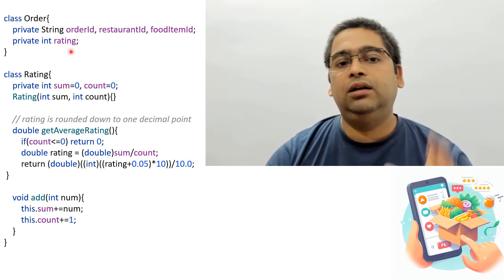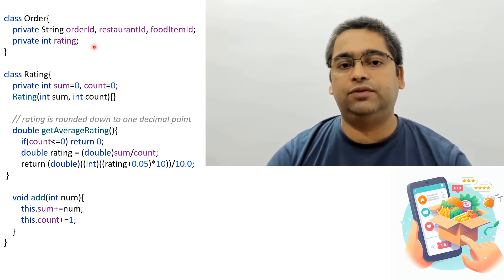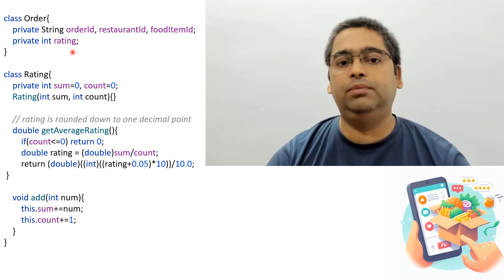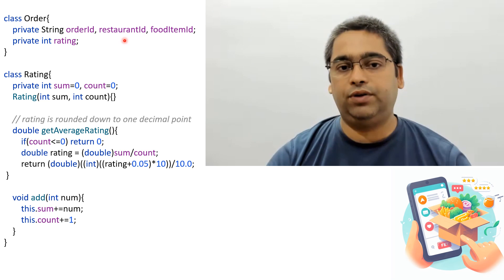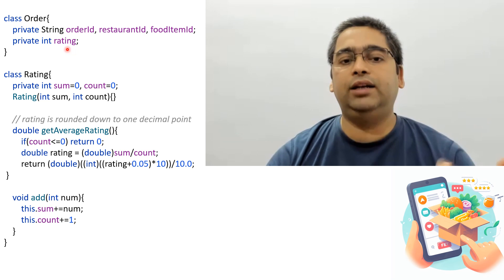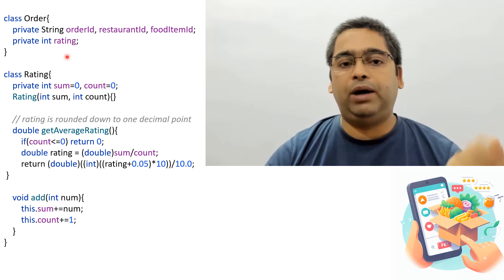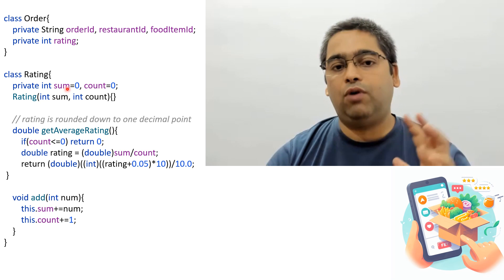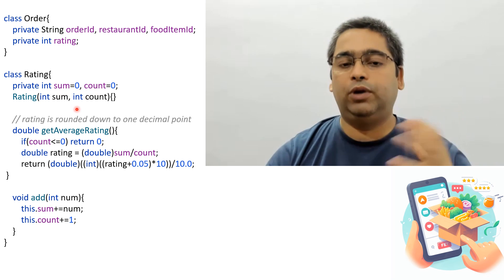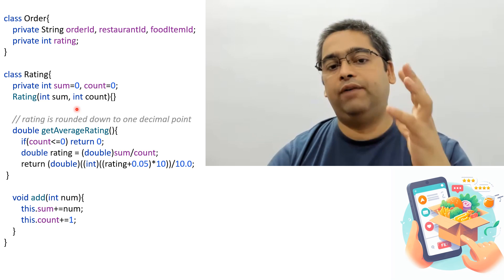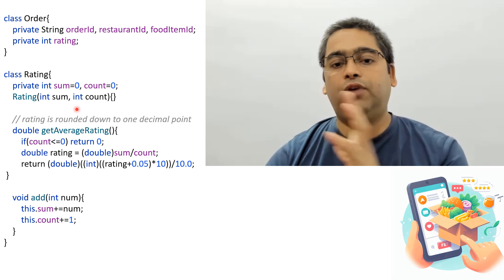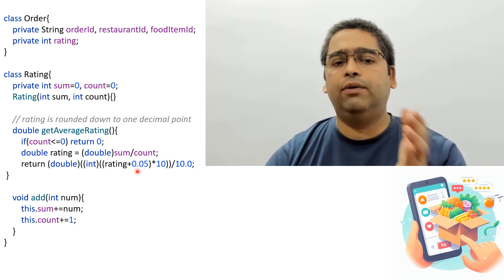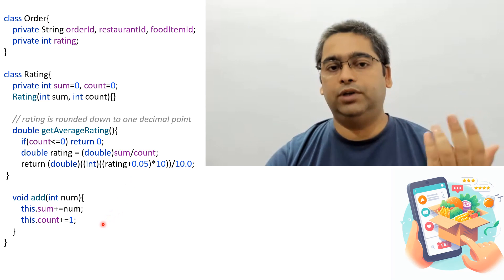Let's start by listing the entity classes. The first one is the Order class — since this is a food ordering system, you order a food item from a given restaurant and may assign a rating from 1 to 5. We also need a cumulative Rating class which keeps track of all ratings and the count of raters. The average rating is simply sum divided by count, rounded down to one decimal point.